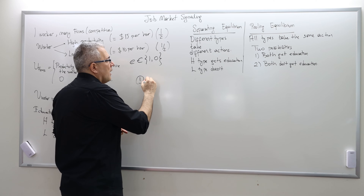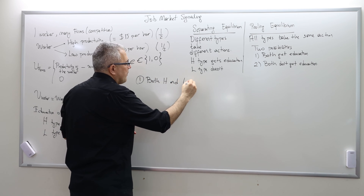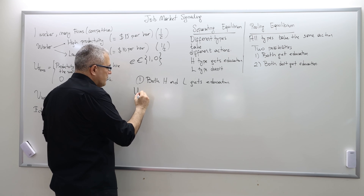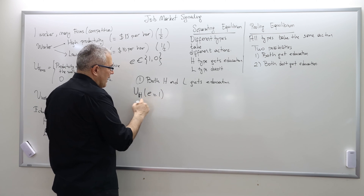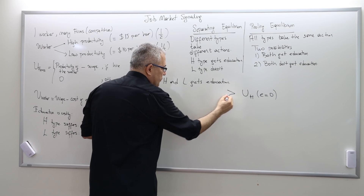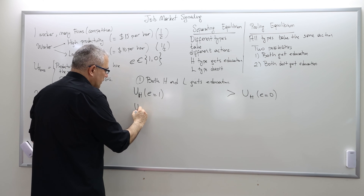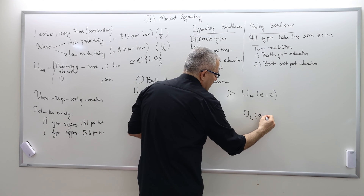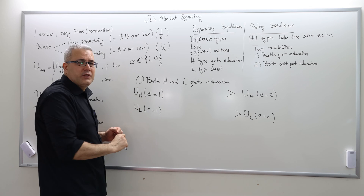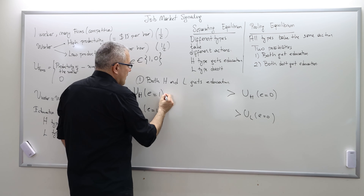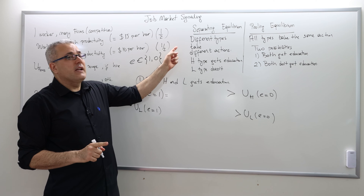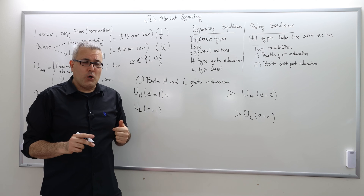Let's check the first one: both the high and low type get education. Here I'm going to check the utilities of the high type and the low type. The low productivity guy is also getting an education, so it is not like the separating equilibrium.